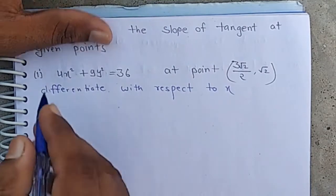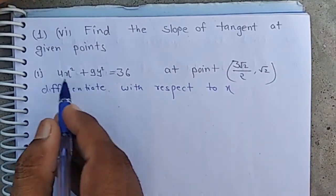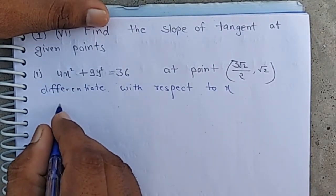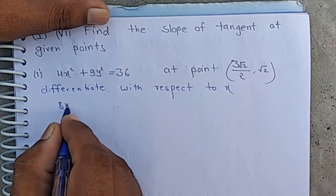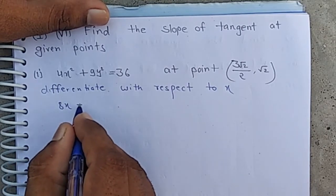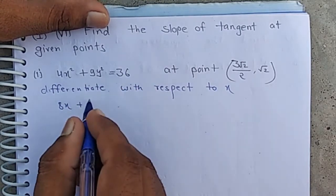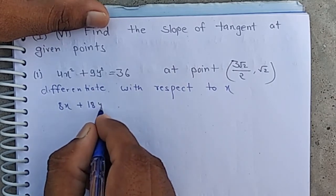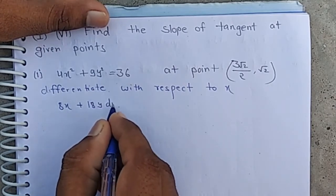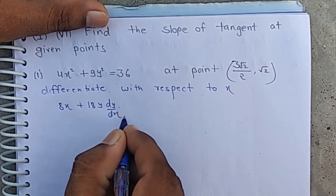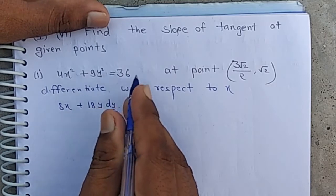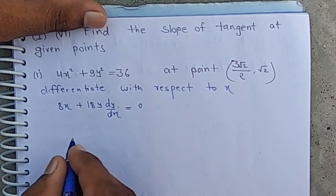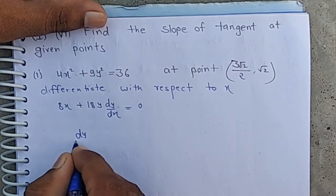Differentiating with respect to x: the differentiation of 4x² is 8x, and the differentiation of 9y² with respect to x is 18y·(dy/dx). The constant term differentiates to 0, giving us dy/dx equal to the following.